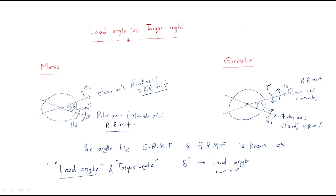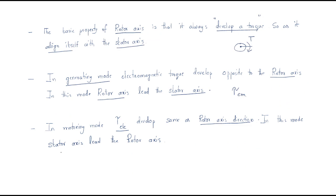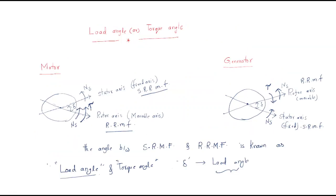In motoring mode, the electromagnetic torque developed is in the same direction as the rotor axis. Both the rotor axis direction and the electromagnetic torque are in the same direction. In this mode the stator axis leads the rotor axis — the stator axis is at the top leading position. The reason is simple: the input supply is given initially to the stator in the motor, while for the generator the supply is given to the rotor.